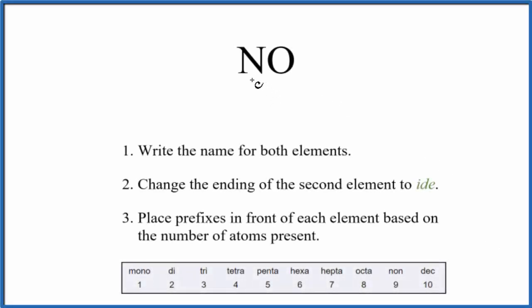In this video, we'll write the name for NO. We have a nitrogen bonded to an oxygen. This is a very important chemical, both industrially and biologically, so it has its own kind of special name. It's called nitric oxide.